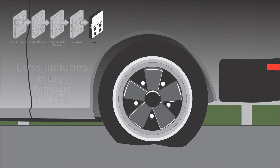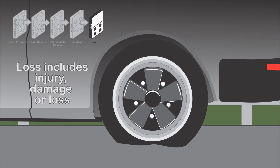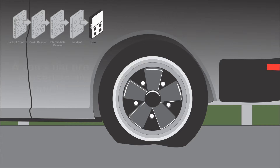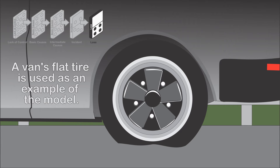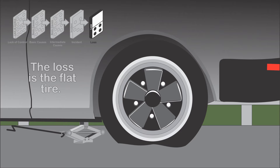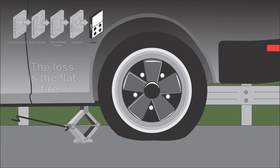The first domino is loss. The result of an incident is injury, damage, or loss. The loss could be bodily injury, property damage, or financial loss. In an example, a van transporting campers has a flat tire. The tire is worn and should have been replaced. No one is injured, and the loss is the destroyed tire.